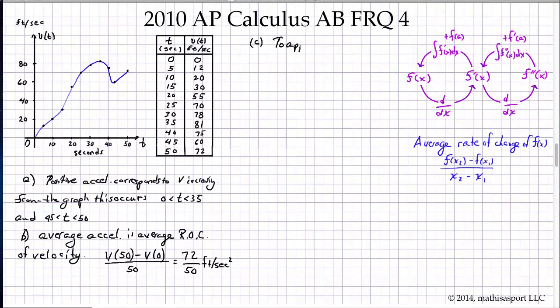We're going to approximate using average acceleration from t equals 35 to t equals 45. And so we have V(45) minus V(35) over 10, and that's going to give us 60 minus 81, which equals negative 21 over 10 feet per second squared.